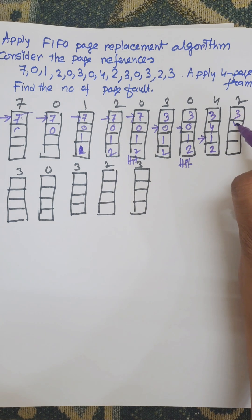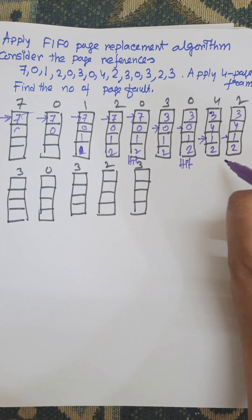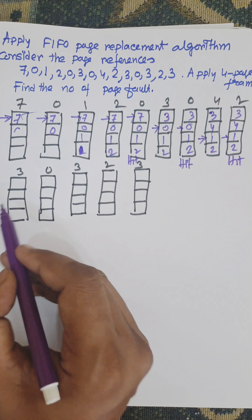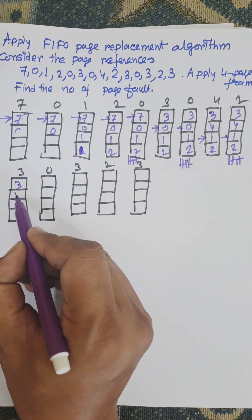Now 2 is available, that is hit. Now 3 is available, that is hit. Now 3 is available, that is again hit.